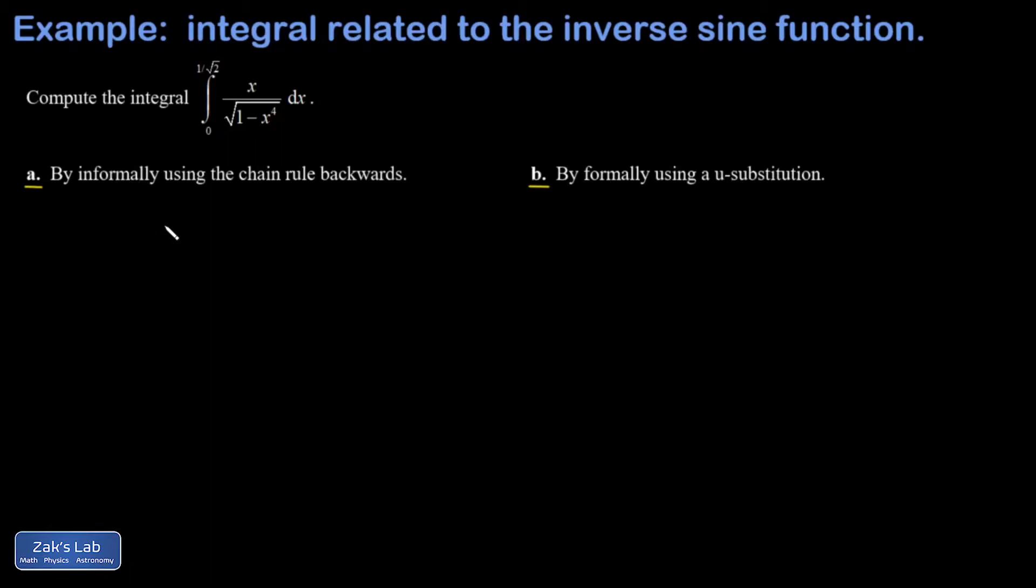Absolutely the key to this one is to recognize that we're looking at something that fits the form of the derivative of an inverse sine function. The derivative of the inverse sine is just 1 over the square root 1 minus x squared, and I recognize here that I could write this as 1 over the square root 1 minus something squared. It's 1 minus x squared squared.